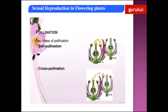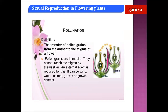The embryo sac is very important. Except the polar nuclei, all cells present in the embryo sac are haploid. It is only the polar nuclei which are diploid — this becomes very important under fertilization.